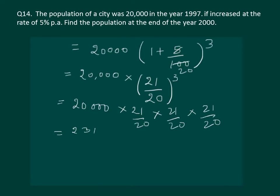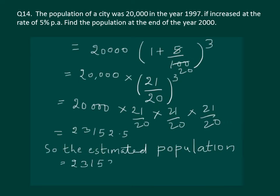So you will estimate it. Since population cannot be in points, note our answer is in points but we know that population cannot be in points, so we will write the estimated population would be twenty three thousand one hundred and fifty three persons.